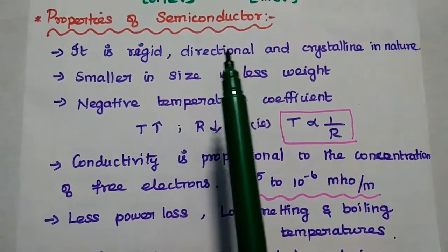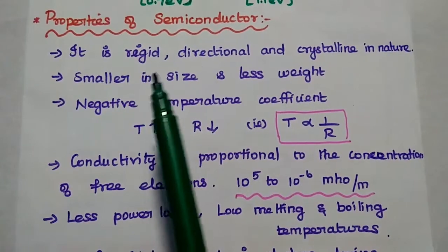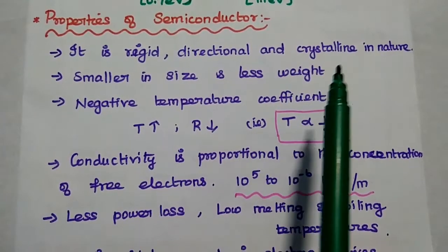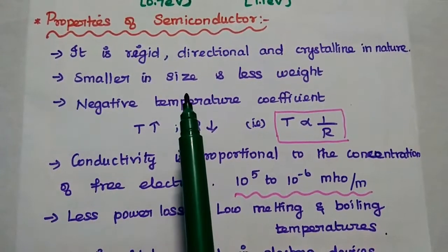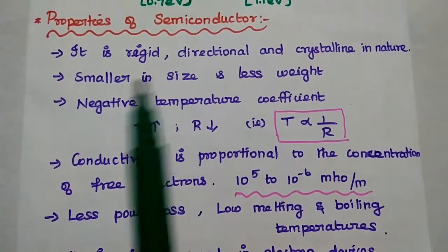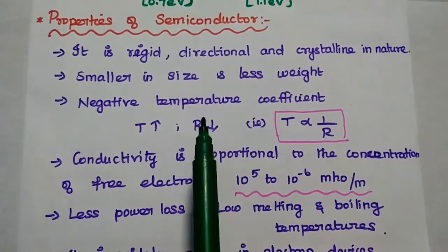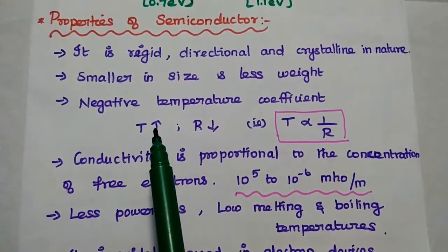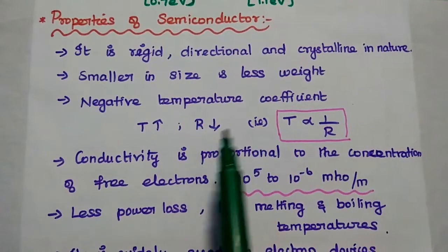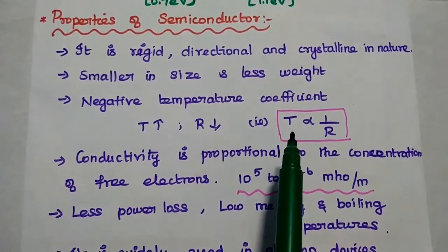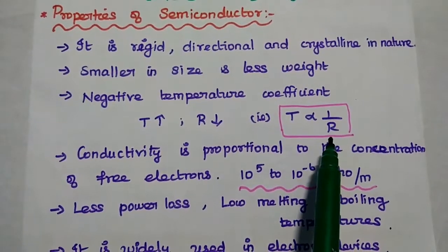The properties of semiconductor material: The structure of semiconductor is rigid, directional, and crystalline in nature. It is smaller in size and less weight. It has a negative temperature coefficient, meaning when the temperature increases, the resistance value decreases — temperature is inversely proportional to resistance.